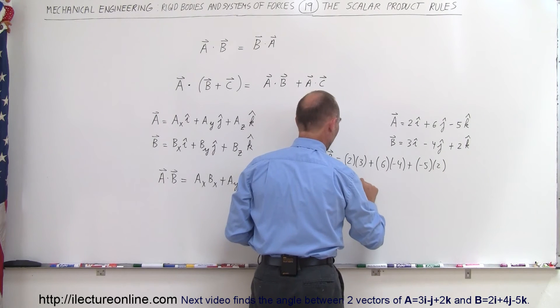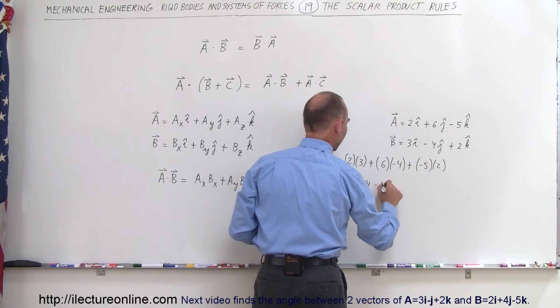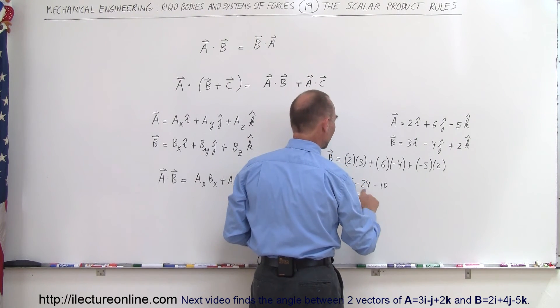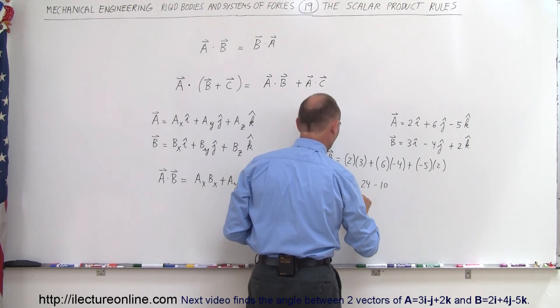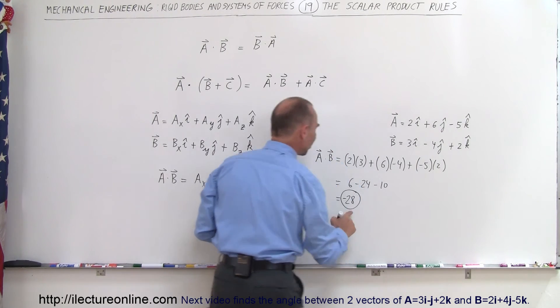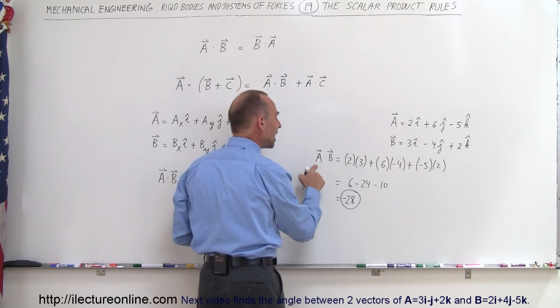And so this becomes 6 minus 24 minus 10, which is equal to 6 minus 34 or minus 28. And so that would be the scalar product of vectors A times B.